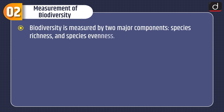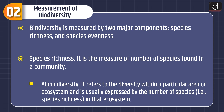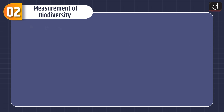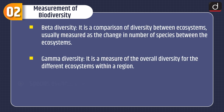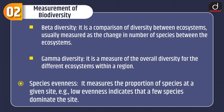Biodiversity is measured by two major components: species richness and species evenness. Species richness is the measure of the number of species found in a community. Alpha diversity refers to diversity within a particular area or ecosystem, expressed by the number of species (species richness) in that ecosystem. Beta diversity is a comparison of diversity between ecosystems, measured as the change in number of species. Gamma diversity is a measure of the overall diversity for different ecosystems within a region. Species evenness measures the proportion of species at a given site; low evenness indicates that a few species dominate the site.